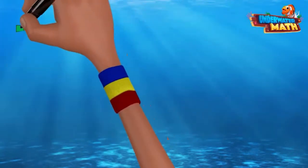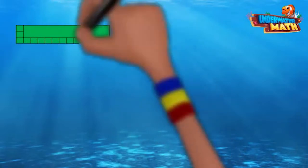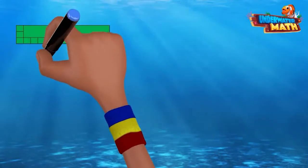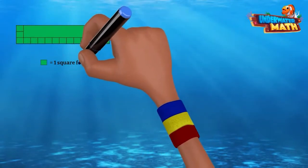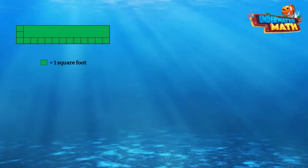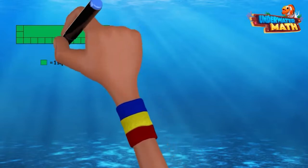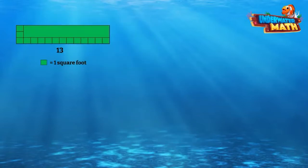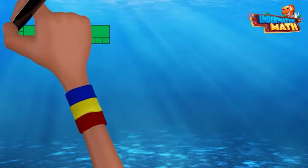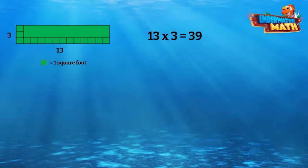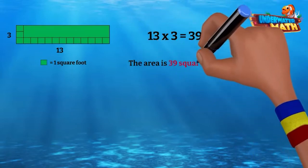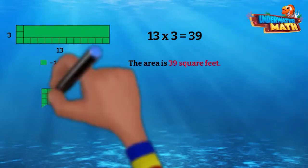Let's try some more practice problems. What is the area of this rectangle? Each square equals one square foot. Count the squares for length — it's 13. Count the squares for width — it's 3. 13 times 3 equals 39. The area is 39 square feet.